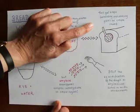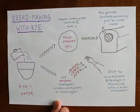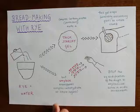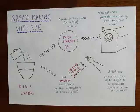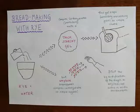So unlike with wheat, where it's the gluten mesh network that you have to work at by kneading that traps the gases, here it's the thick, starchy gel that naturally happens when you mix rye and water together that holds those gases in suspension in your crumb.